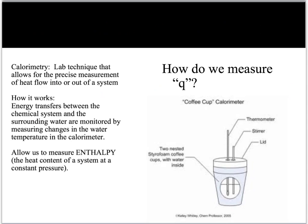Now we're going to look at how we measure the amount of heat energy in a system. We use a lab technique called calorimetry. There can be very sophisticated calorimeters, but they can be as simple as a couple of nested foam cups. The foam cup on the inside has a certain amount of water added to it, a lid on the cups, and a thermometer. What you are doing is monitoring energy transfers between the chemical system and the surrounding water by measuring the temperature of the water. We'll be doing a couple of labs that use this technique.